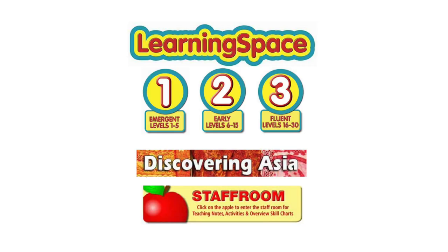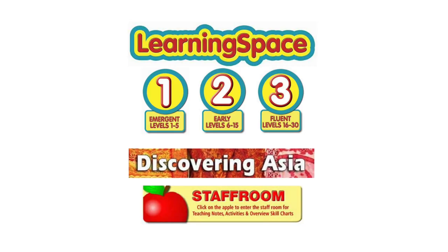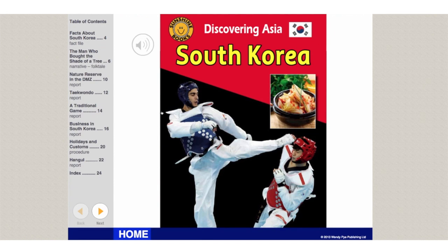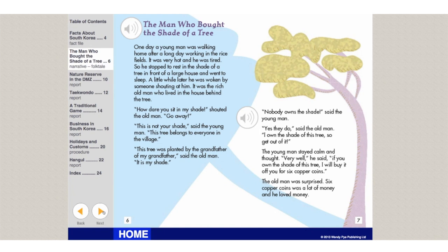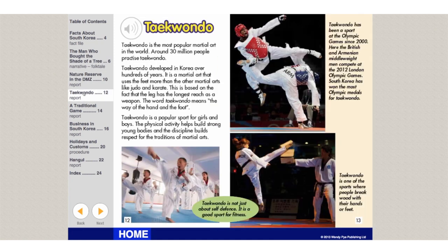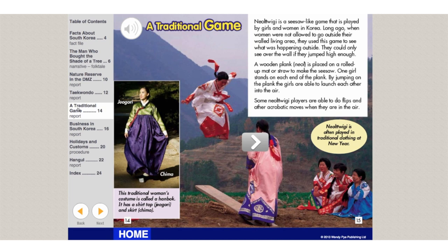Back at the home page, you can access the Discovering Asia section. These titles are for fluent readers, level 30 plus. These non-fiction texts start with a traditional story, and the rest of the text explores a range of historical and contemporary topics that give insight into the culture of that country. Each text features a range of text types and there are embedded video clips throughout.